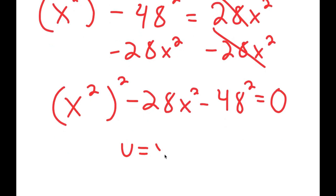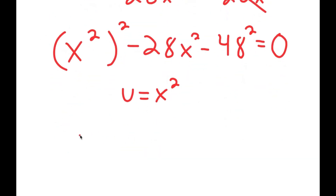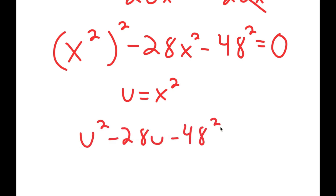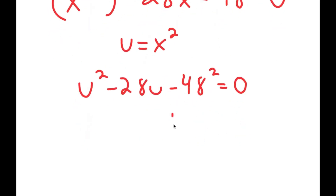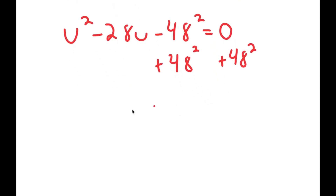I'll set u equal to x squared, so the equation becomes u squared minus 28u minus 48 squared equals zero. I'll solve this by completing the square, so I add 48 squared to both sides, giving u squared minus 28u equals 48 squared.